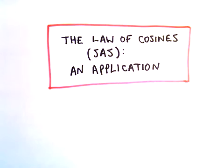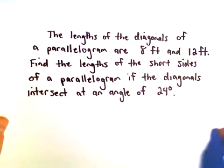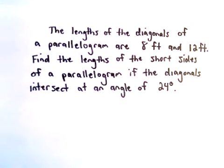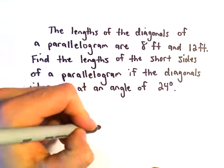Okay, so just one more problem here using the law of cosines. The lengths of the diagonals of a parallelogram are 8 feet and 12 feet. We want to find the lengths of the short sides of the parallelogram if the diagonals intersect at an angle of 24 degrees.